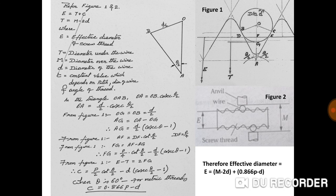Now, to summarize what was discussed earlier: effective diameter E equals T plus C, and T equals M minus 2d, where M is the diameter over the wire and d is the diameter of the wire. C equals 0.866P minus D. Therefore the effective diameter of the screw thread equals M minus 2d plus 0.866P minus D.